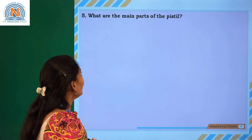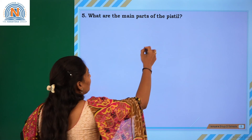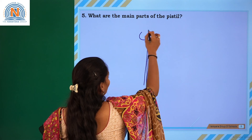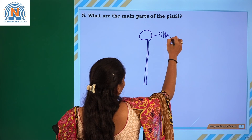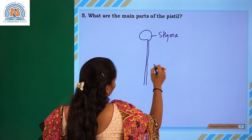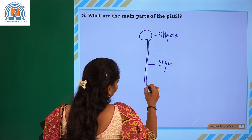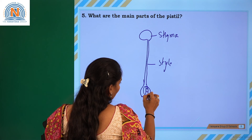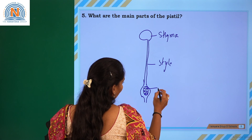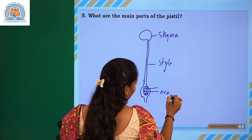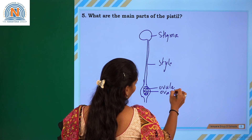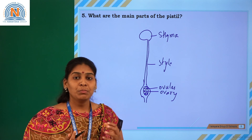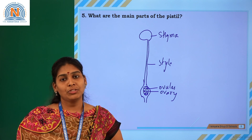The next question is: what are the main parts of the pistil? The pistil, also called the gynoecium, consists of the stigma, style, ovary, and ovules. These are the important parts of the plant which are involved in the reproduction process.